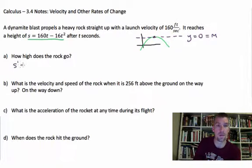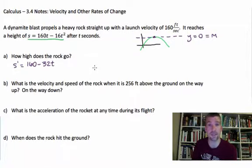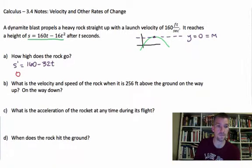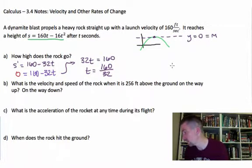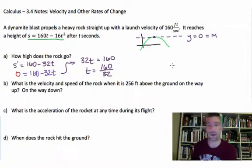So S prime is going to be equal to 160 minus 32t. And that's going to be the equation to find the slope of any tangent line for this graph. I'm really interested in where my tangent line has a slope of zero. So what I'm going to do is I'm going to put a zero in here. And I'm going to solve this guy out. Zero equals 160 minus 32t. So what do I do? I simply subtract from both sides and then divide both sides by that 32. So T is equal to 160 over 32.